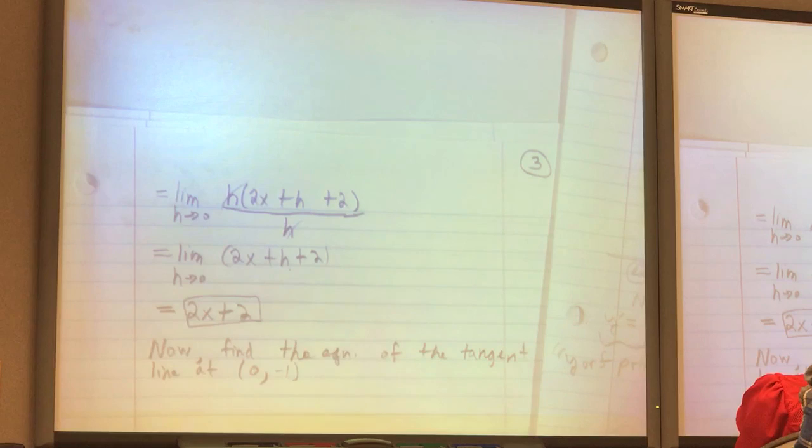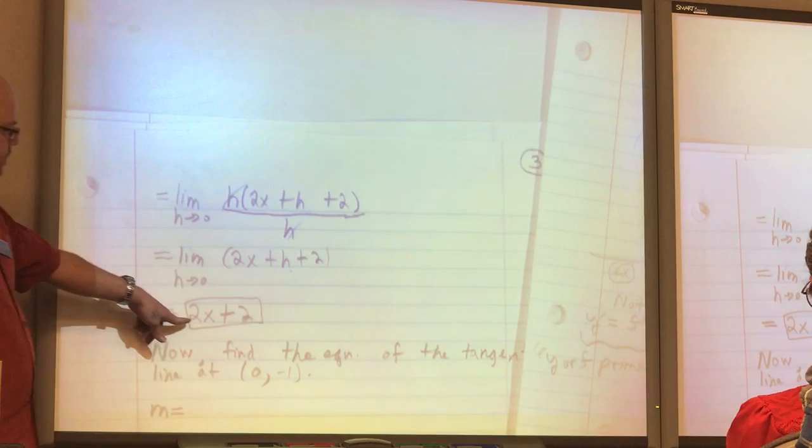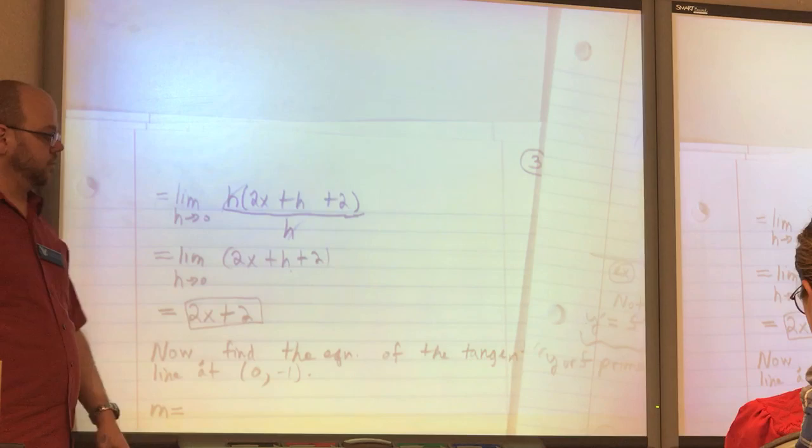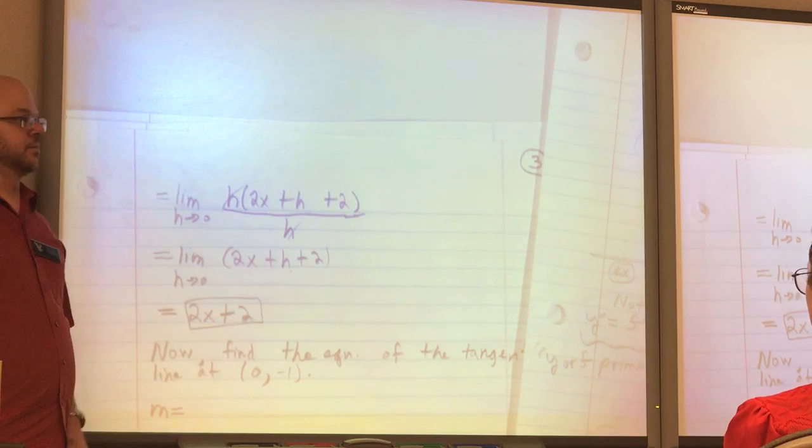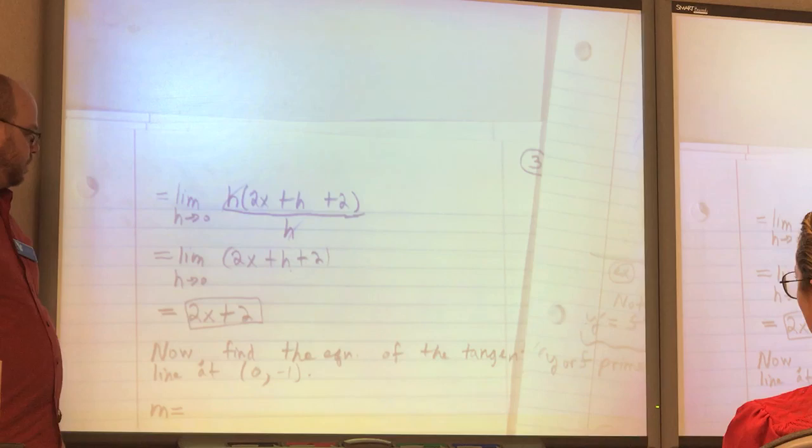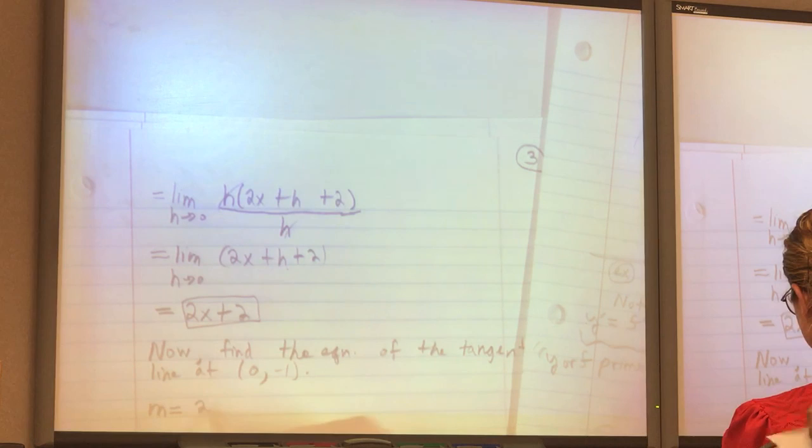We already did most of the work. So, you just plug in the 0 now. It's a question. Where did the h go in just the step of the line? See how there's no limit here anymore? It's because I applied it. No. Oh, you're talking about when I plug in 0? Yes. Sorry, I thought you were saying that number there. Yeah, I'm the one who's stupid. All right, so 2 times 0 plus 2. I get 2. Very good. So, the slope of the tangent line at the point (0, negative 1) is 2. I want the equation though, so what do I do now?